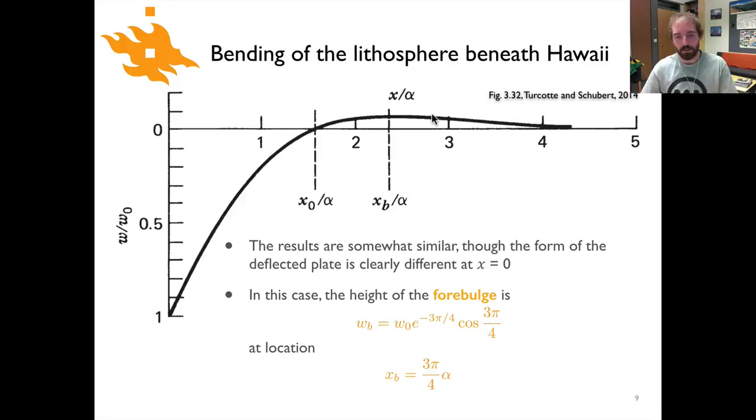The height of the four bulge we can calculate just like we did before that's this wb term where it's equal to the maximum deflection times e to the minus 3 pi over 4 times the cosine of 3 pi over 4 and that's going to occur at location xb equals 3 pi over 4 times alpha. So again previously I think we had xb equal to pi times alpha so that's our slightly closer location of the four bulge.